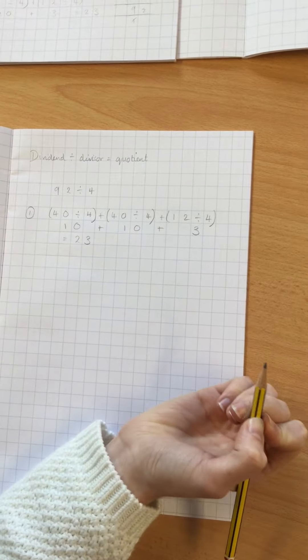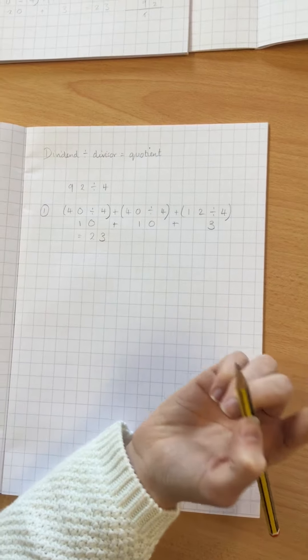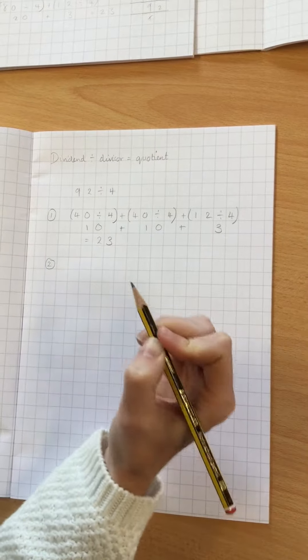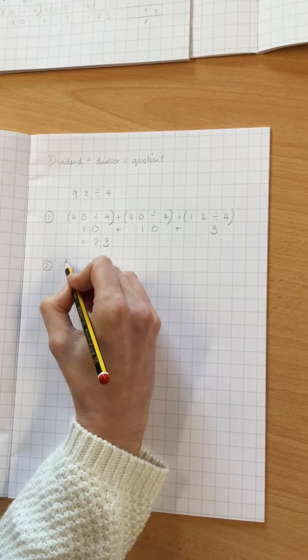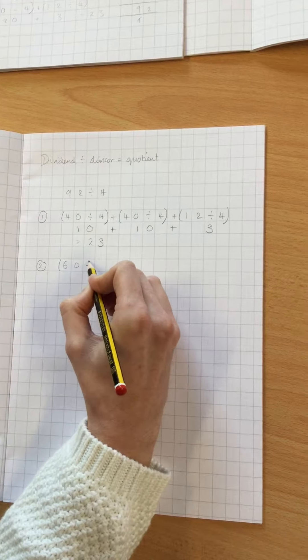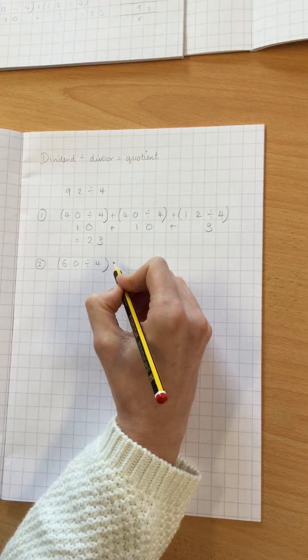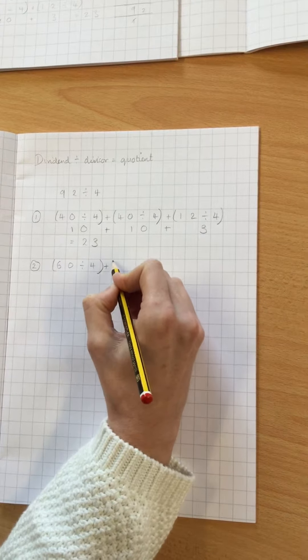That's one way I could split it up or redistribute it. I could do it another way. For example, I could do 60, because that's divisible by 4. I've got 60 and I want 92, so I've got 32 left. Luckily, 32 is also divisible by 4.